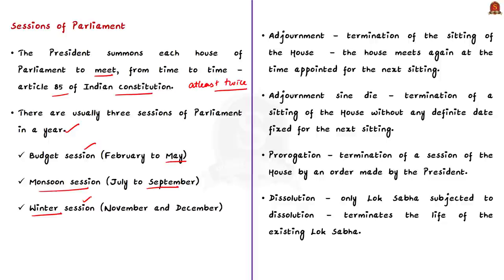Now let us see some of the terms associated with the session of the parliament: adjournment, adjournment sine die, prorogation, dissolution, and quorum. A session of the parliament has many sittings and each meeting in a day consists of two sittings. A sitting of the parliament can be terminated by adjournment. So adjournment is defined as a termination of the sitting of the house, after which the house meets again at the time appointed for the next sitting.